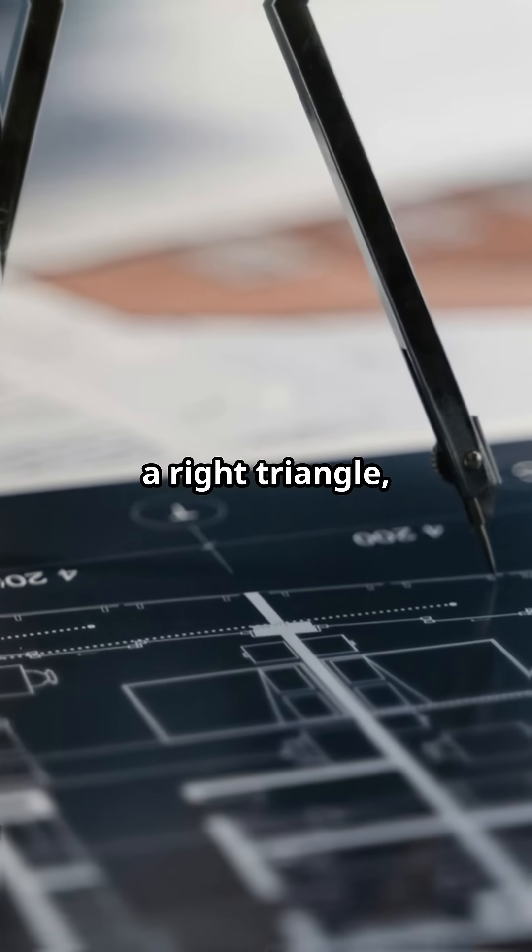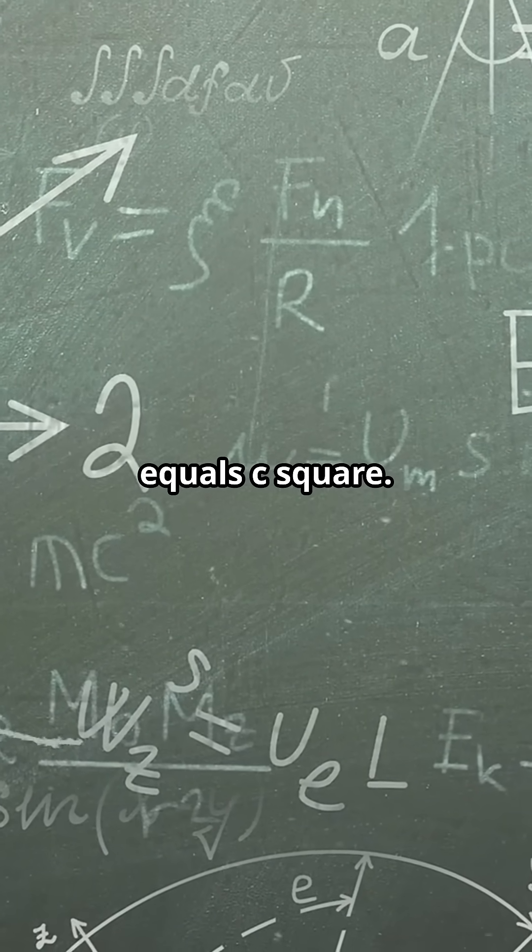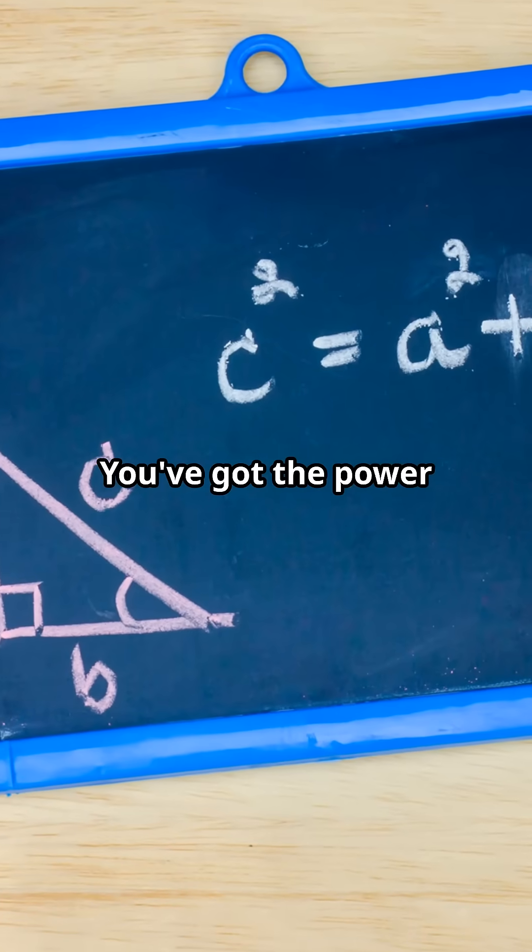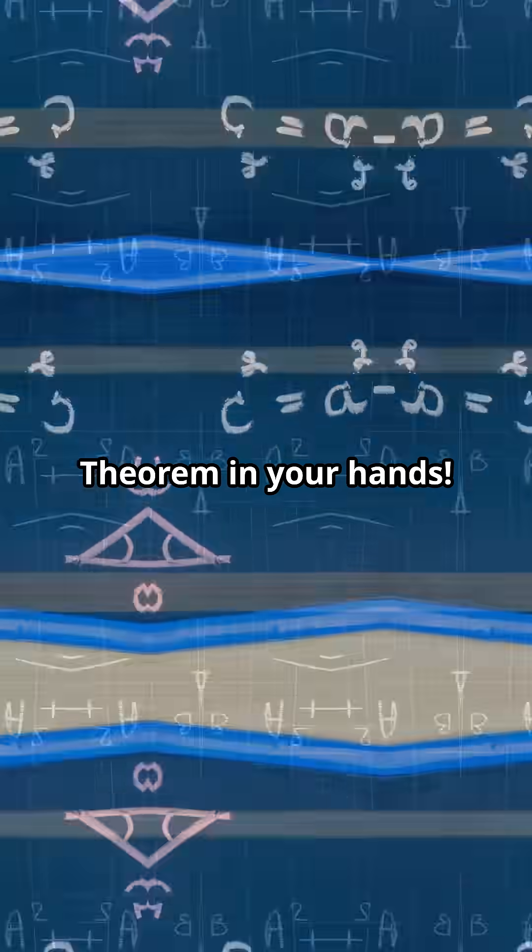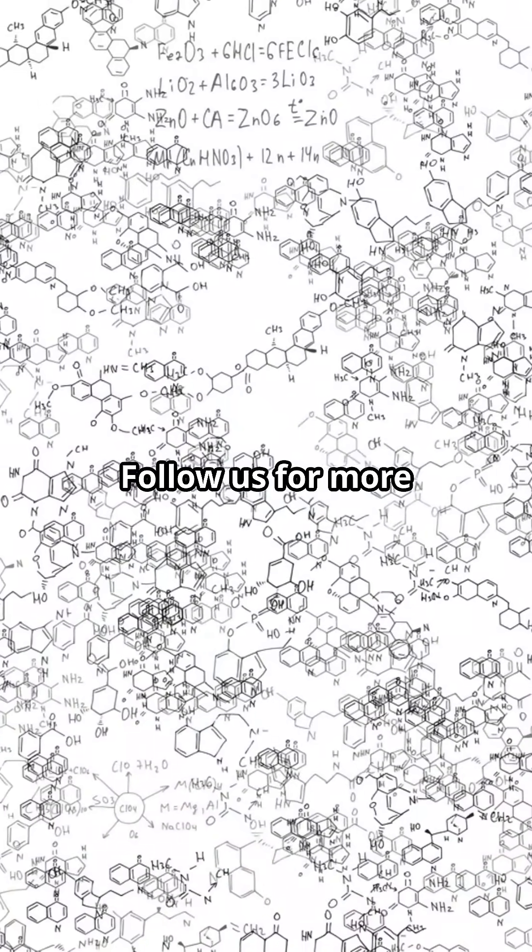So next time you see a right triangle, remember, A² + B² = C². You've got the power of the Pythagorean theorem in your hands. Thanks for watching and keep on calculating. Follow us for more math magic.